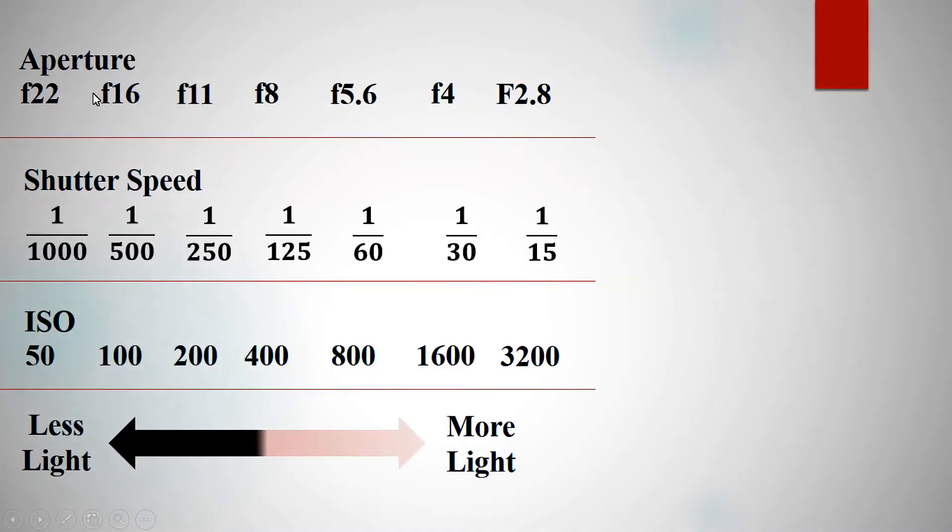Next, we have 'one stop' in the DSLR camera. That means one stop is a unit of measurement in the DSLR camera. Let's explain what one stop means.